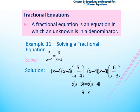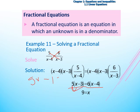Now, if we have a fractional equation — a fractional equation is one in which the unknown is in the denominator. This is different from the previous example where numbers were in the denominator. Here the unknown we want to solve for is in the denominator. We can simply cross-multiply: 6 times x minus 3 on one side and 5 times x minus 4 on the other side. Using the distributive property, we get 5x minus 15 equal to 6x minus 24.